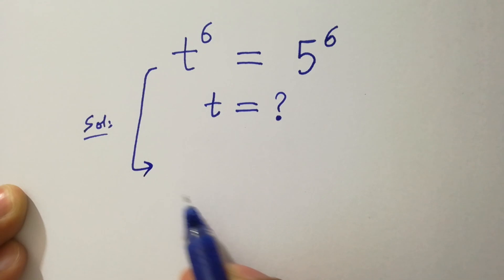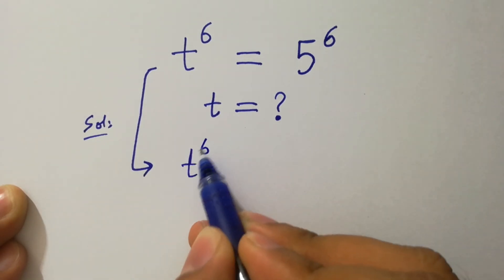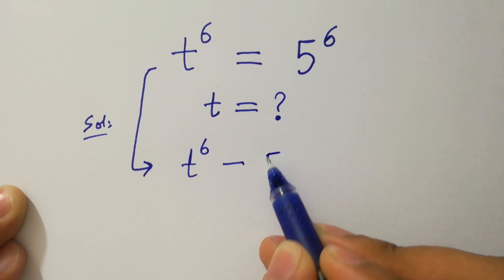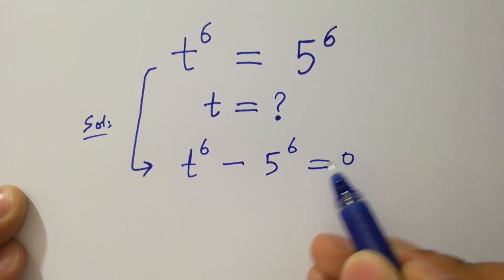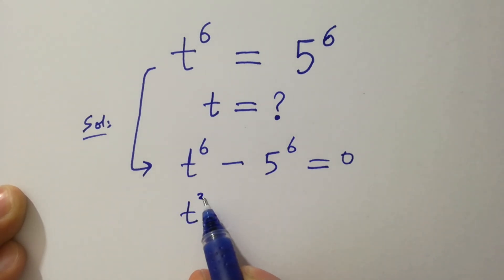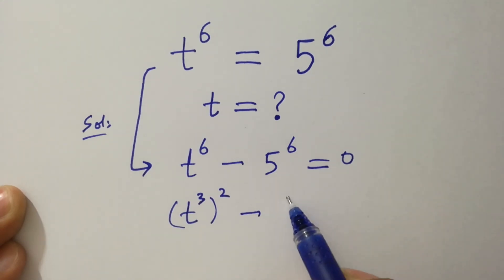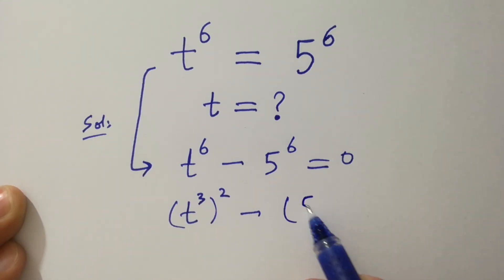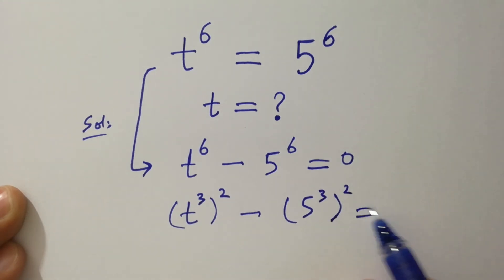It can be written as t to the power 6 minus 5 to the power 6 equal to 0, which is the same as t to the power cube, to the whole power square, minus 5 to the power cube, to the whole power square, equal to 0.